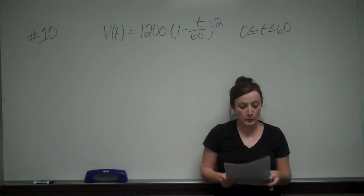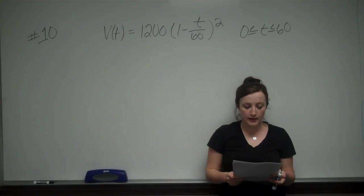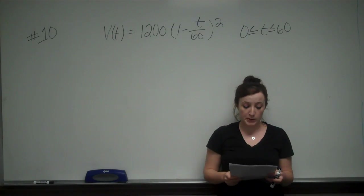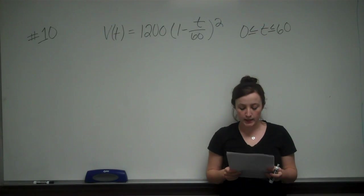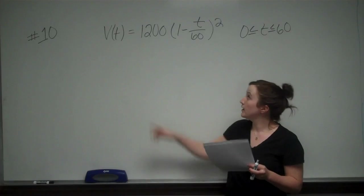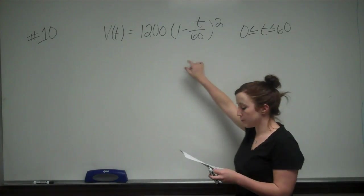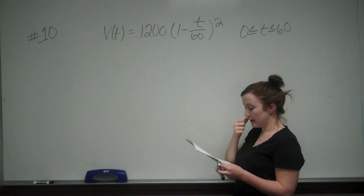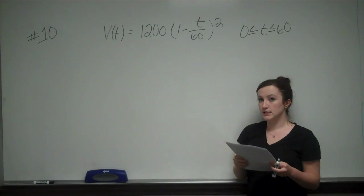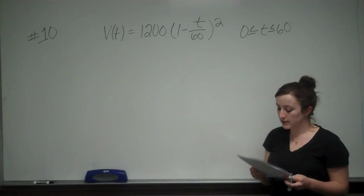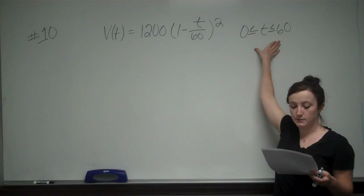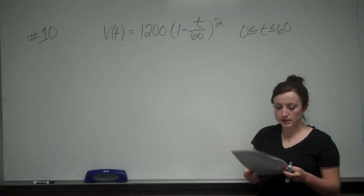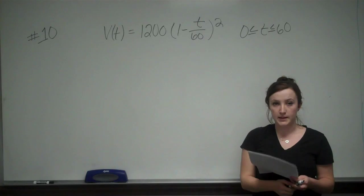This is problem number 10, a word problem. A cylindrical tank holding 1200 gallons of water can be drained in an hour. The volume of water in the tank can be measured according to the formula V(T) = 1200 times (1 minus T over 60) squared, where 0 ≤ T ≤ 60. T is measured in minutes and V(T) is the number of gallons of water remaining in the tank.